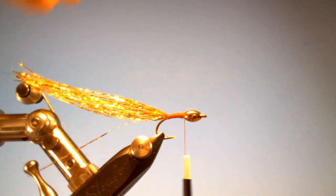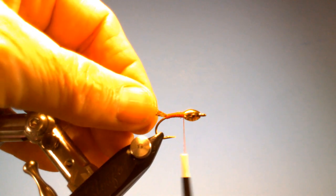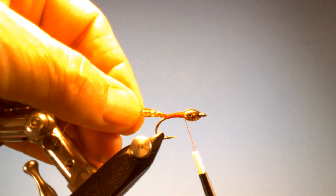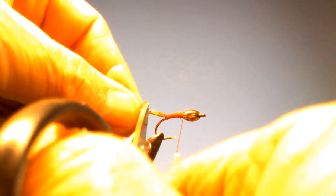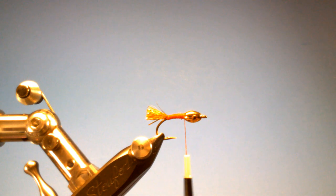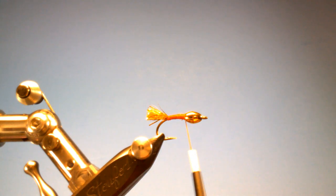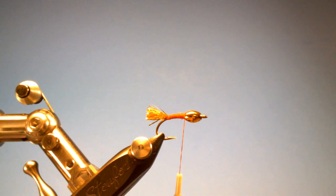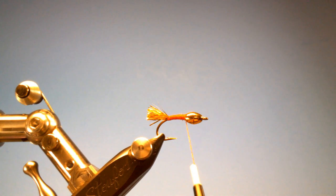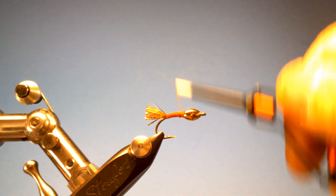And if you're using smaller than 210 denier, you're going to have to make a lot more wraps. Now, I want this tail to be no longer than a half of an inch. So I'm going to trim it off right about there. Because, as I mentioned in the previous ones, shad can be notorious for short strikes.